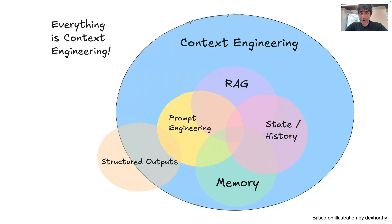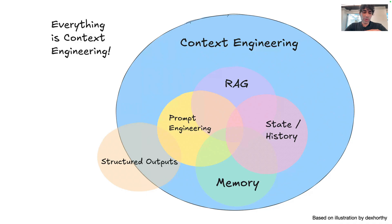Context engineering, if you've heard about it, is the art and science of filling the context window with just the right information needed to guide an AI agent's performance. But there are a lot of layers to this beyond just clever prompts, and I want to walk you through the pitfalls and some practical tips.